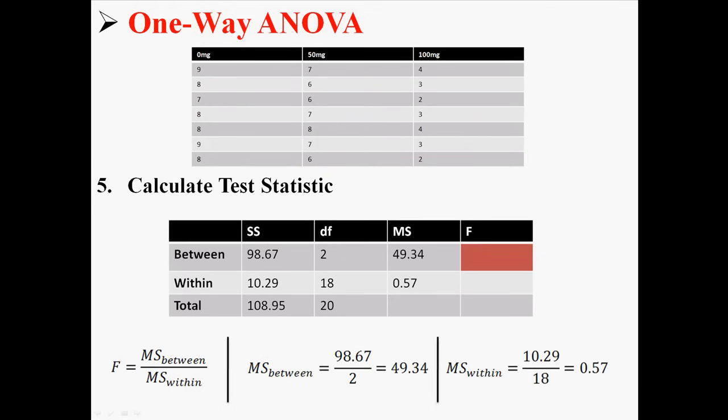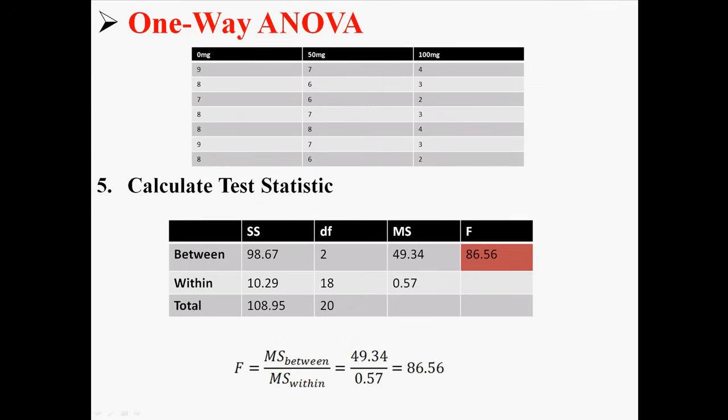Now these are the equations for mean square between and mean square within. All you have to do is take the sum of squares and divide it by the degrees of freedom. So to find mean square between, you just take 98.67 and divide by 2 and get 49.34. Same thing within. You just take 10.29 divided by 18 and get 0.57. And now that you have both of those mean squares, you can just divide them to find an f. And we get an f of 86.56.